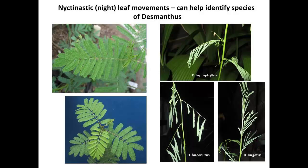They also have a special trait called nyctinastic leaf movements, where the leaves close up with poor light or at night. This trait helps us identify the different species. One particular species folds its leaflets down at night but the leaf stem or rachis stays in a normal position. Another folds both the leaf stem and leaflets down at night, and the third — Desmanthus virgatus — folds its rachis and leaflets upwards. It's a trait that really helps us identify the different species.